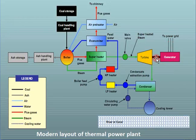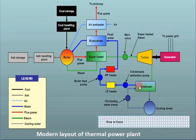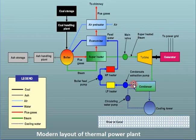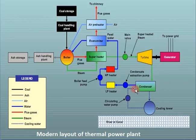The steam which has been used inside the turbine comes outside and passes through the condenser. Inside the condenser, the steam is condensed — that is, the steam is converted into water at constant temperature, because here only the latent heat of the steam is removed. Ideally, there is no temperature change in the condenser; only a phase change takes place. After the condenser, the steam is converted into water.